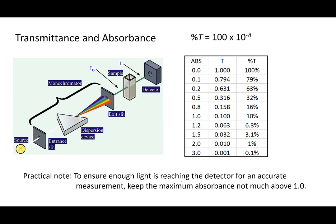Let's look at some values to get a feel for the magnitudes. If the sample absorbs no light, I equals I₀, so transmittance is 1 and percent transmittance is 100%. If absorbance is 0.1, transmittance is 0.794 — about 79% of the light gets through, so for every 100 photons going in, about 79 make it through. If absorbance is 0.5, transmittance is 0.316, meaning about 32% of light gets through — about a third through, two thirds absorbed.